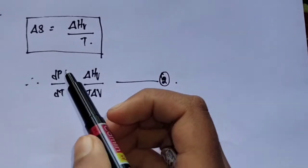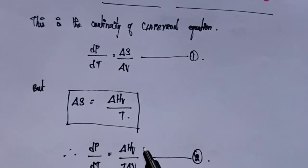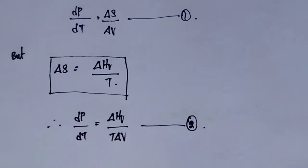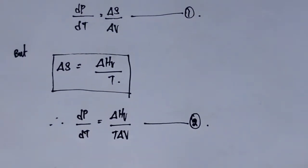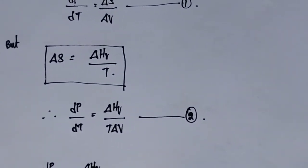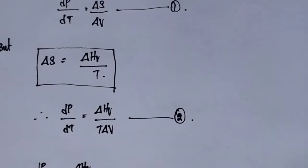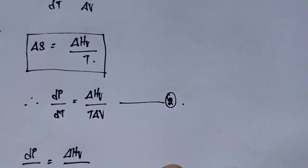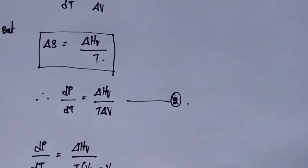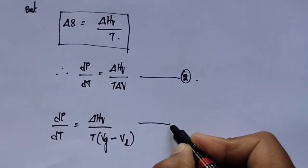If the liquid is in equilibrium with the vapor phase, we can write the equation as: dP/dT is equal to ΔHv upon T multiplied by the volume of the gas phase minus the volume of the liquid phase. Take this as equation number 3.